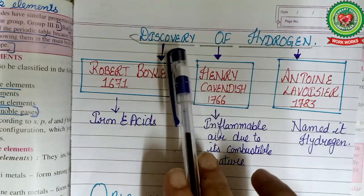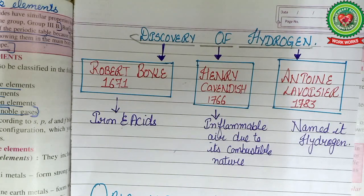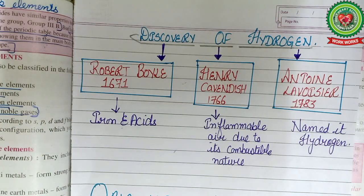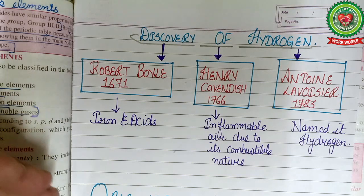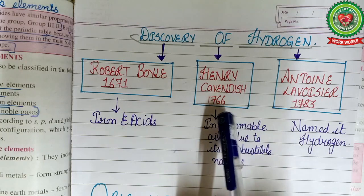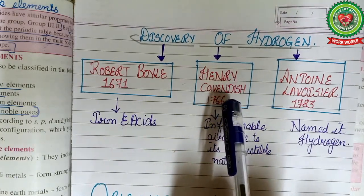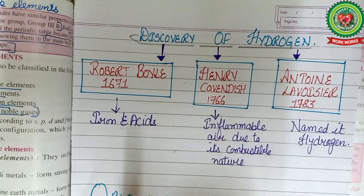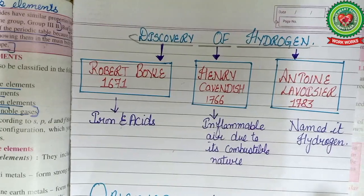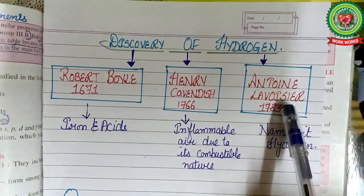Now let's talk about the discovery of hydrogen. Three scientists were involved. First, Robert Boyle in 1671 produced hydrogen gas in his laboratory by reacting iron with acids, but he did not identify the gas distinctly. Then in 1766, Henry Cavendish was the first person to recognize hydrogen gas as a discrete substance. He named it 'inflammable air' because of its combustible nature.